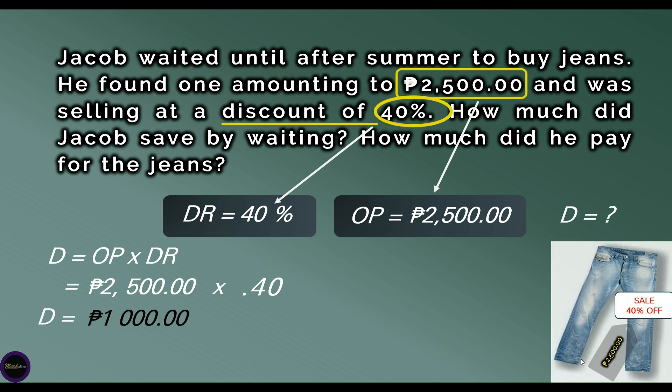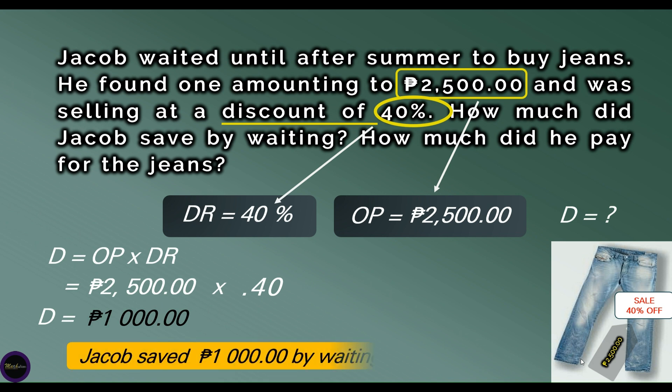Our discount is 1,000 pesos. This is the answer to the problem: how much did Jacob save by waiting? The answer is 1,000 pesos.